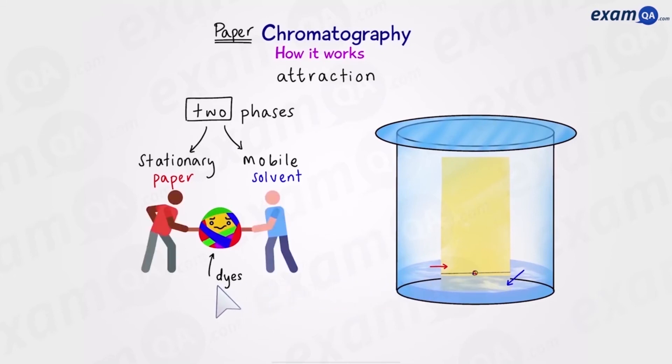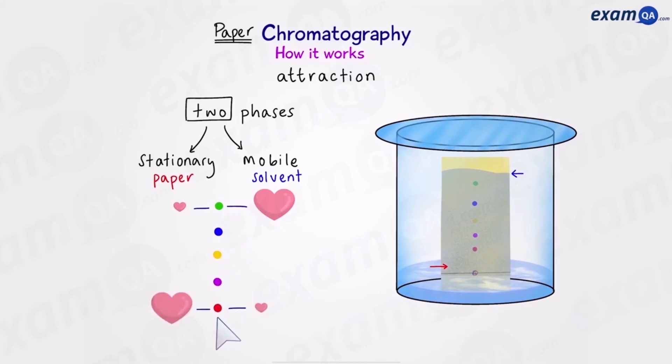As the solvent runs over the paper the different dyes have a dilemma. Should they stick to the stationary phase or go along with the mobile phase? And it's not always yes or no, it could be something in between. So as they separate we can see that some dyes move faster while others don't move as much. For example in this scenario we can see that the green spot has moved up the furthest. That means the green spot really likes the mobile phase and doesn't like the stationary phase as much. In other words it has the highest solubility in the solvent.